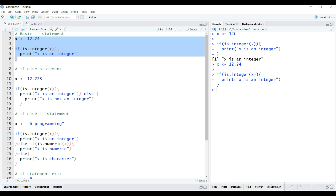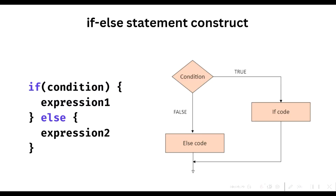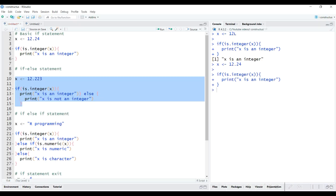This brings us to the next type: the if-else statement. In the if-else construct, the if statement gets extended with an else statement. Note that the else statement does not need an explicit condition — instead it has to be used together with an if statement. The code associated with an else statement gets executed whenever the condition of the if test is not satisfied. Returning to our example, suppose we want to print out 'x is not an integer' whenever the condition is not met.